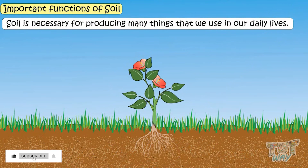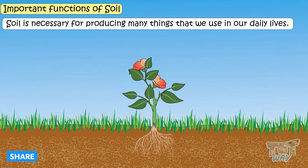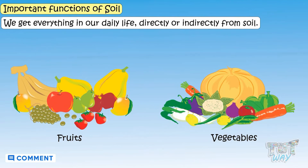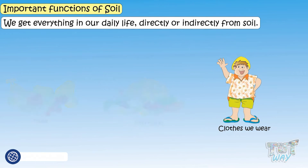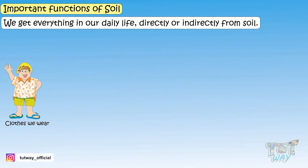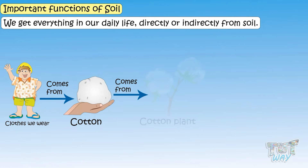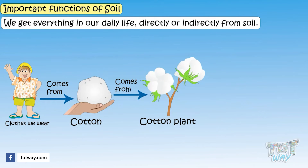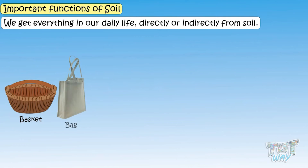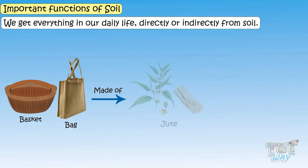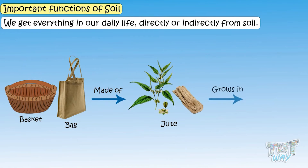Soil is necessary for producing many things — almost everything that we use in our daily lives. All the fruits and vegetables that we eat are supported by soil. Even the clothes we wear: most of the clothes we wear come from cotton, and cotton comes from cotton plants, which are grown in soil. Many baskets and carry bags are made of jute, and jute too grows in soil.